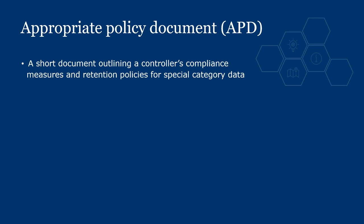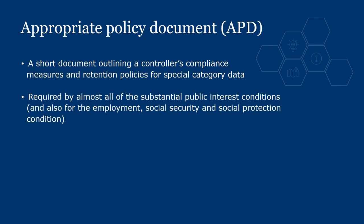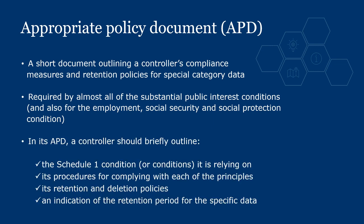An appropriate policy document (APD) is a short document outlining a controller's compliance measures and retention policies for special category data. An APD is required by almost all of the substantial public interest conditions and also for the Employment, Social Security and Social Protection condition. It should include, for example, the Schedule 1 condition or conditions the controller is relying on. The ICO has produced an APD template to help controllers meet this requirement, with links available in the guidance, along with a table showing which conditions require an APD.